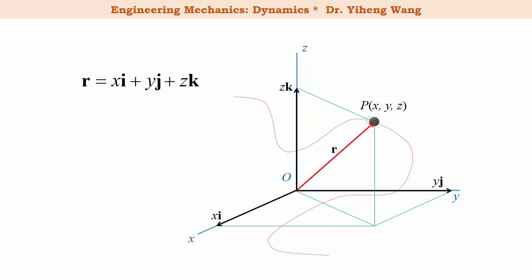After some time delta t, the particle has moved to a new position p prime, which can be represented by a new position vector r prime. The change in position can be represented by this vector delta r, which equals to the new position r prime minus the old position r. The velocity is again defined as the change in position over the change in time, and becomes instantaneous velocity as the time interval approaches zero, and this becomes dr over dt.